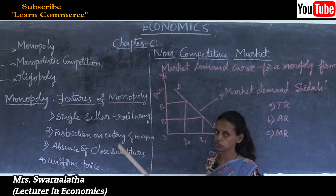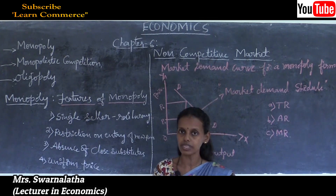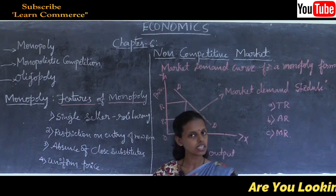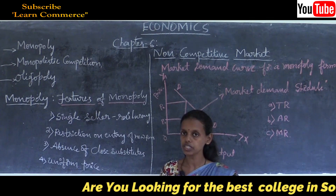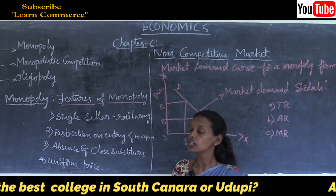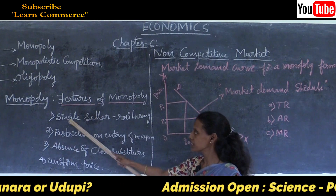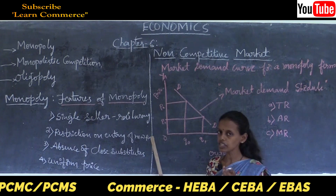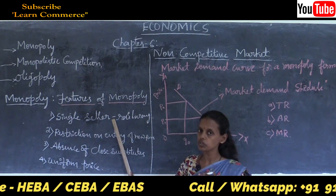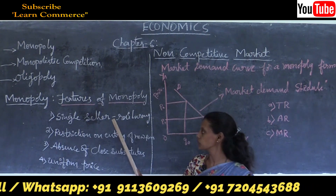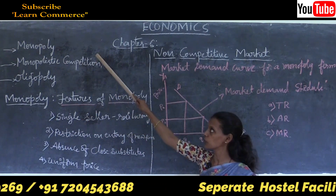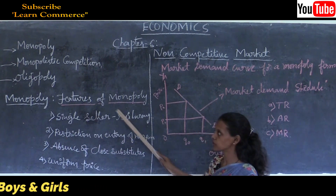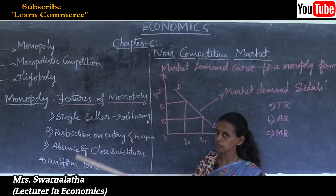Under monopoly there is restriction on entry of new firms. As we studied in the fourth chapter under perfect competition, there is free entry and exit - any firm can enter or exit the industry depending on profit or loss conditions. But under monopoly only a single seller exists, ownership is with a single owner, and there is restriction on entry of new firms because all decisions are taken by the single seller who fixes the prices.